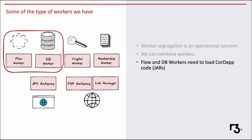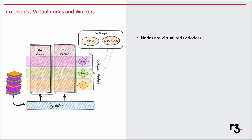I'm going to focus on DB worker and flow worker as it's quite relevant to a Coda app developer. A Coda app in Next-gen Coda is still a JAR file. It needs to be hosted in a runtime, in a host process. I've got highly available flow and DB workers, and certain virtual nodes as well. A virtual node is not a single JVM process but an execution context — it is an identity combined with an application, i.e., a Coda app.